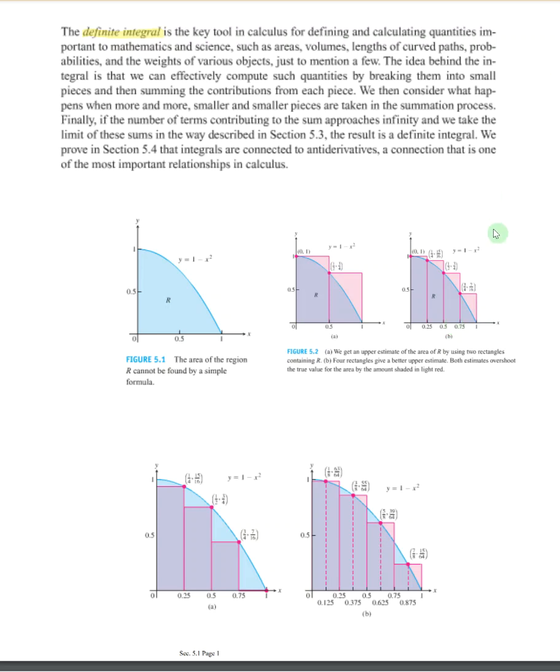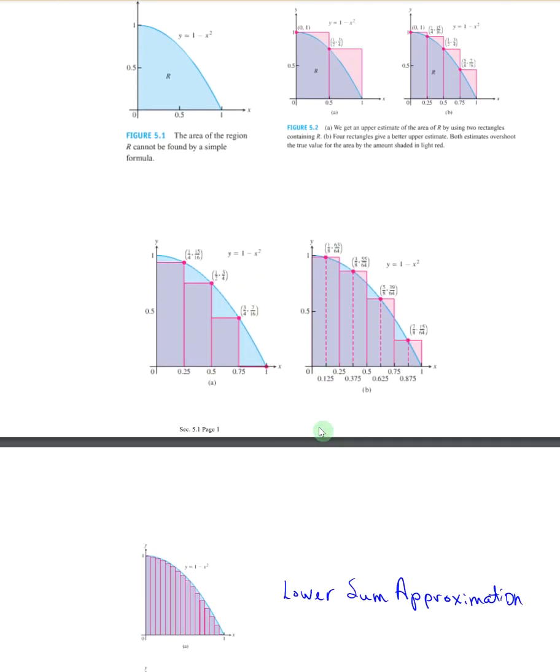Right now we're going to get into the basics. In this picture, the area of this region, the blue, we don't have a simple formula for that area. But we can get an estimate if we use two rectangles. That's an upper estimate, and four rectangles give a better estimate because here we have this much red that's left over that's not actually in it. The more rectangles that you put, the closer you get to the actual area.